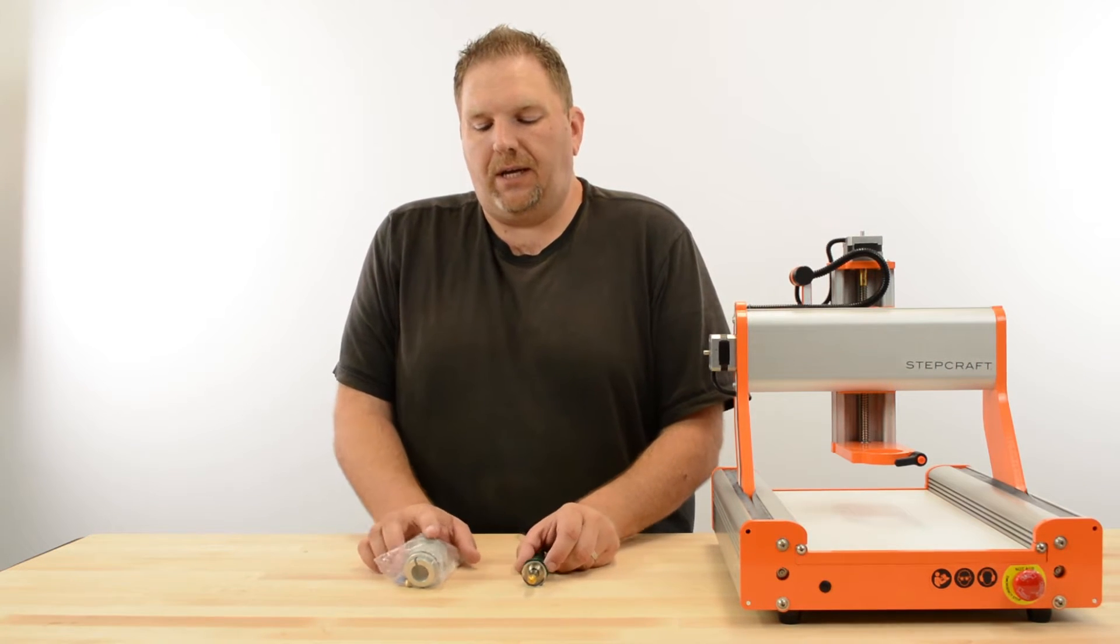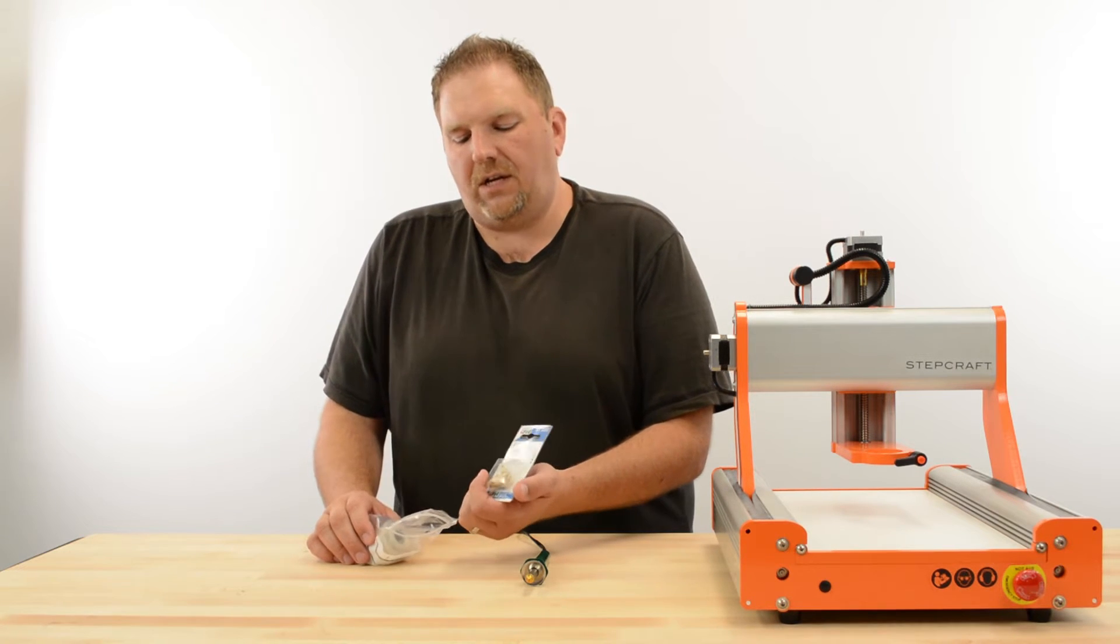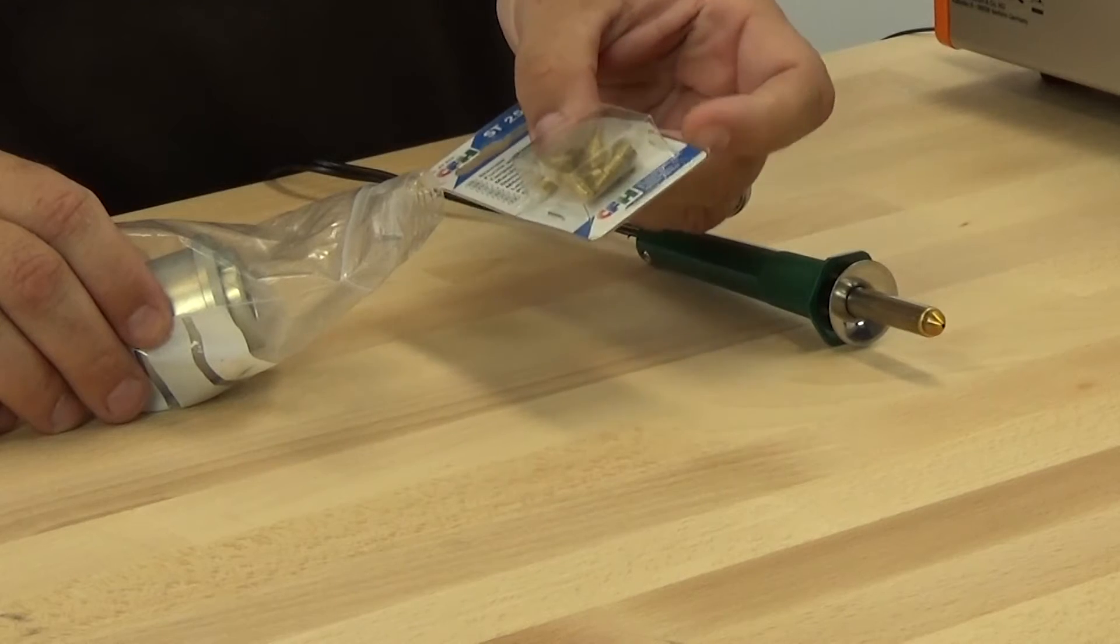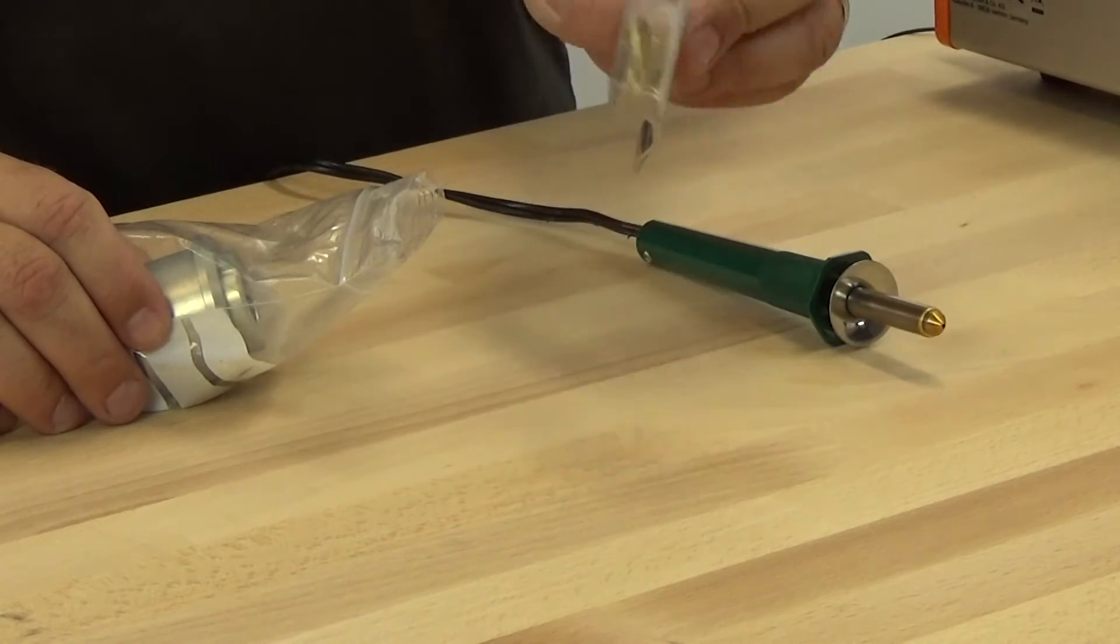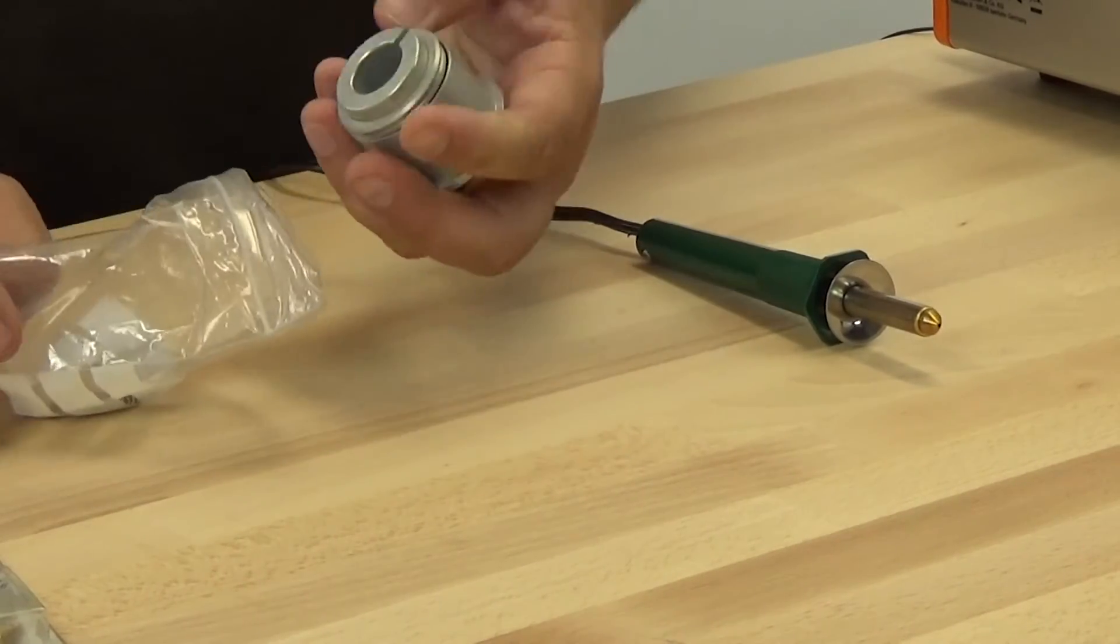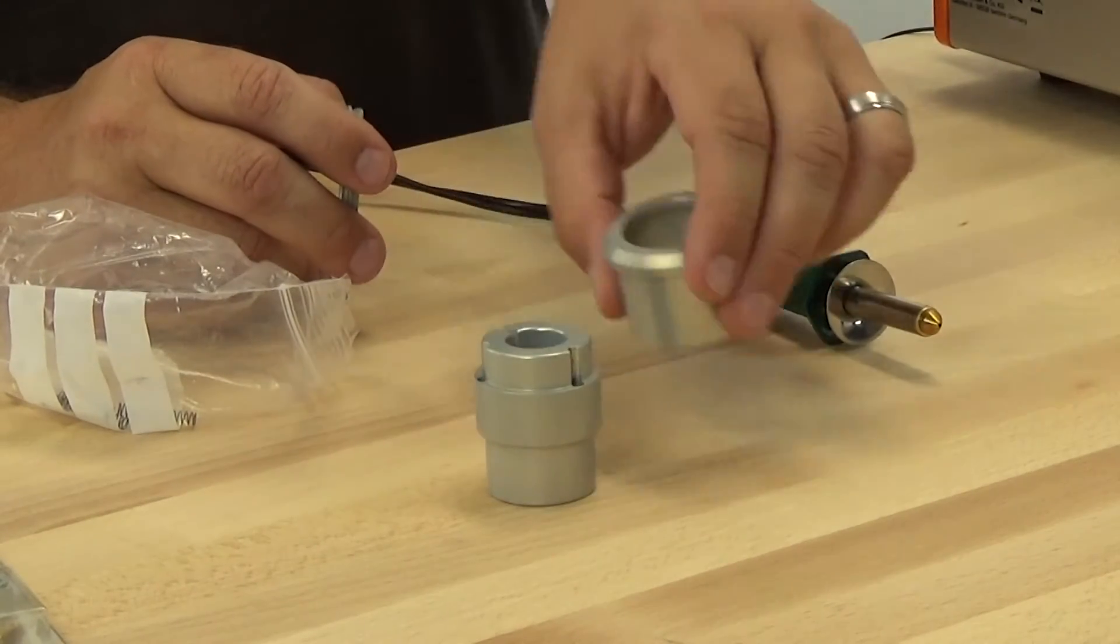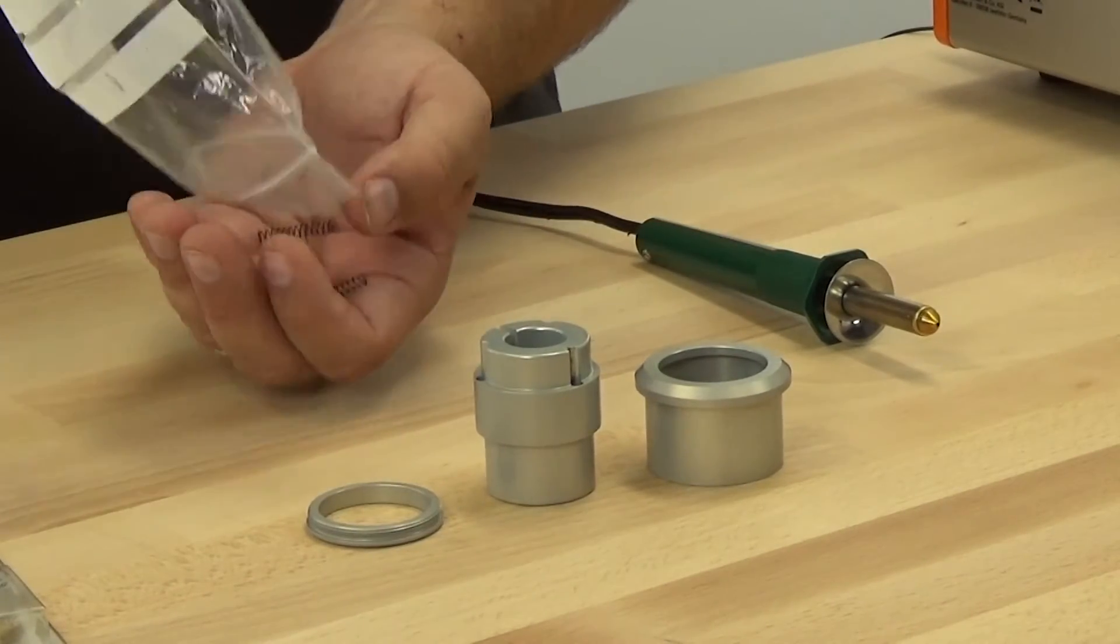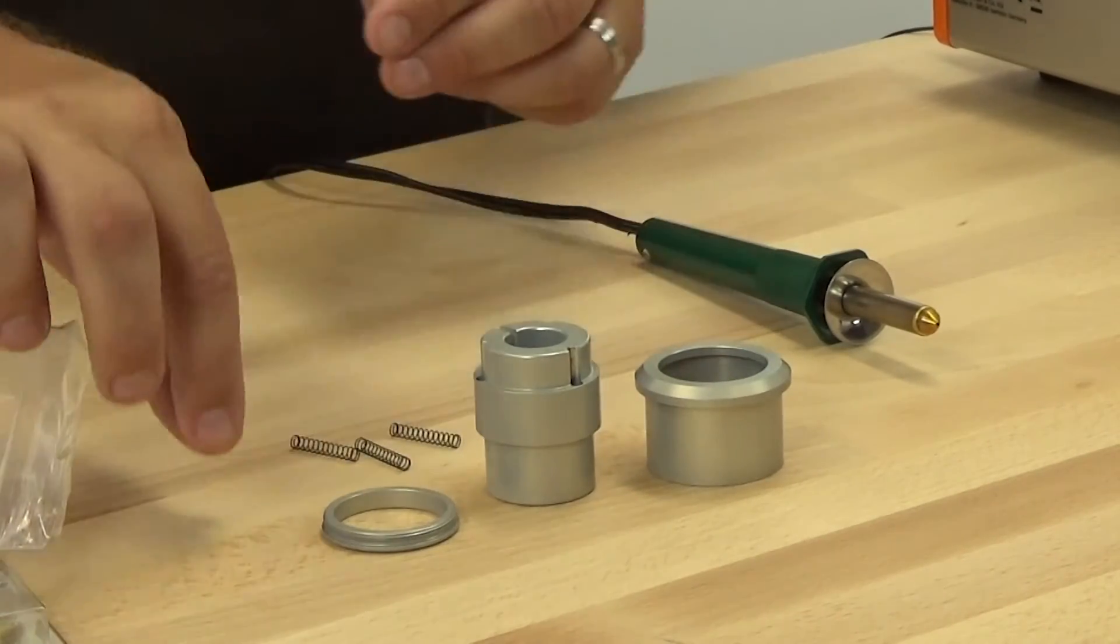The first thing we're going to do is take the contents of the package out. This is a set of spare wood burning tips with specialized ends. We'll probably do a follow-up video later to show different projects with these, but for right now we'll set those aside. Inside the package we have the wood burning attachment which consists of three separate components: a hub, an outer ring, and a retainer nut. We also have three springs and a spare wood burning tip.